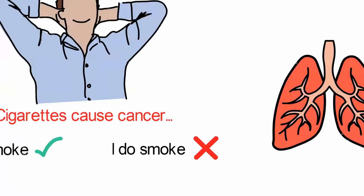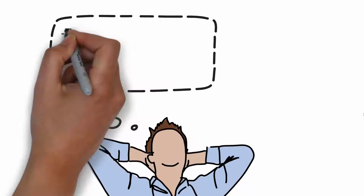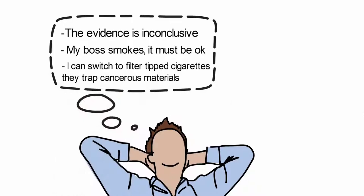The most simple solution would be to quit, but of course, this is easier said than done. Mark has other options. He could tell himself some of these excuses. The evidence is inconclusive. Or my boss is smoking. It must be okay. My boss is very intelligent. I can switch to filter-tipped cigarettes. They trap cancerous materials. Mark could use any of these strategies to continue being a smoker. Any of these strategies would destroy the new belief of cigarettes cause cancer.